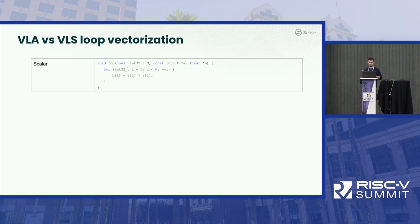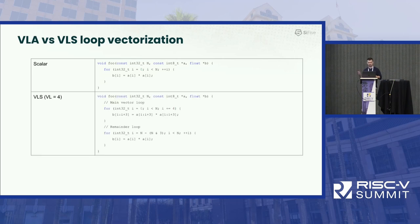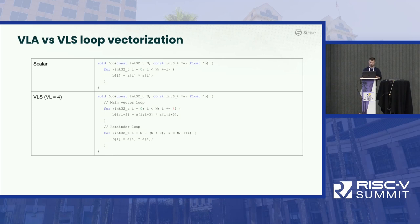Originally, the LLVM loop vectorizer was designed to support so-called VLS type of vectorization. VLS stands for Vector Length Specific, where the vector length, or vector factor as some people call it, is a compile-time constant and is a power of two. In general, the loop vectorizer generates two things: one is the main loop, which contains vector code executing most iterations using vector instructions, and there is a remainder loop — also called epilog or cleanup loop — which executes remaining iterations when the trip count is unknown or not divisible by four.